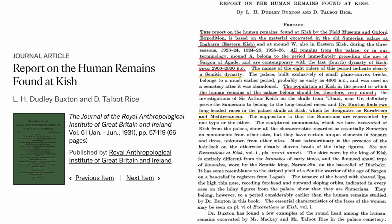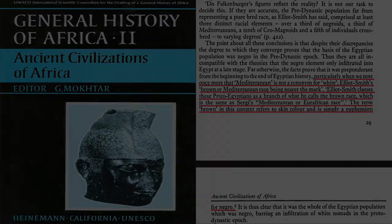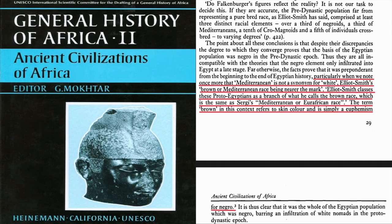The population at Kish was therefore very mixed. Dr. Bingston finds two long-headed races in the palace skulls — the Eurafricain and Mediterranean. There can be little hesitation in ascribing this type to the people called by Elliot Smith the brown race. Mediterranean is not a synonym for white — Elliot Smith's brown or Mediterranean race being nearer the mark. Elliot Smith classes these proto-Egyptians as a branch of the brown race, the same as Sergi's Mediterranean or Eurafricain race.